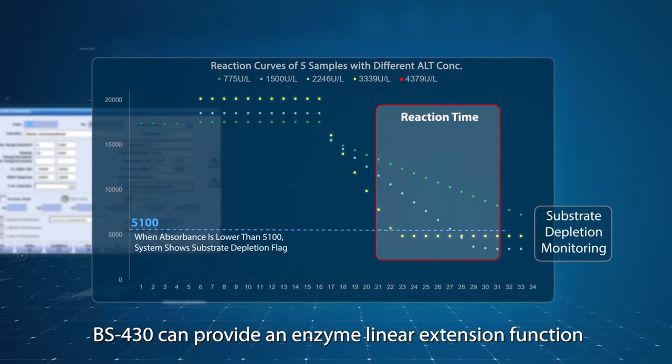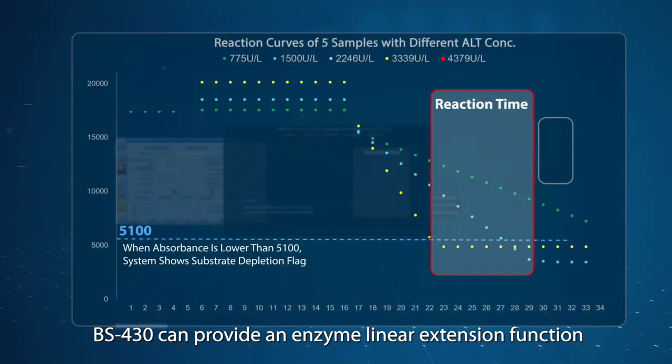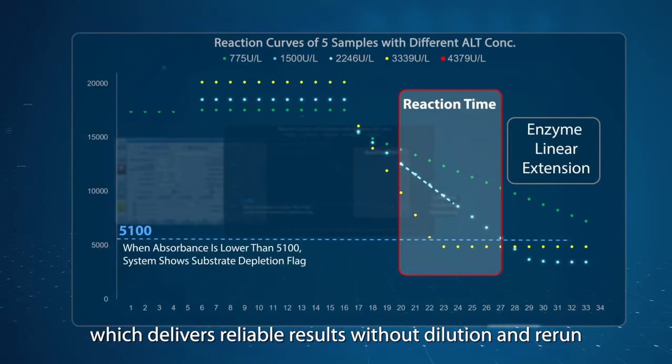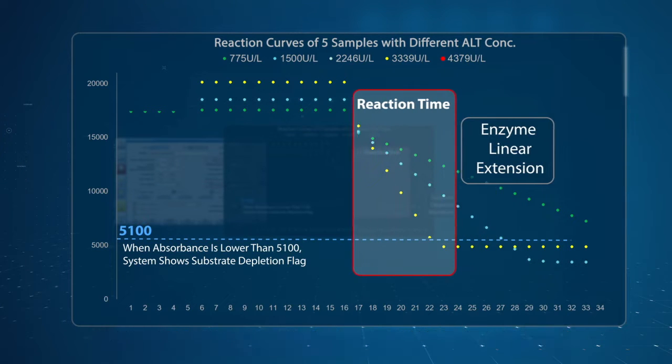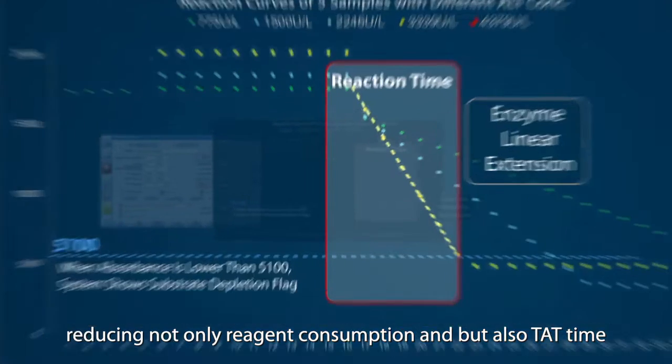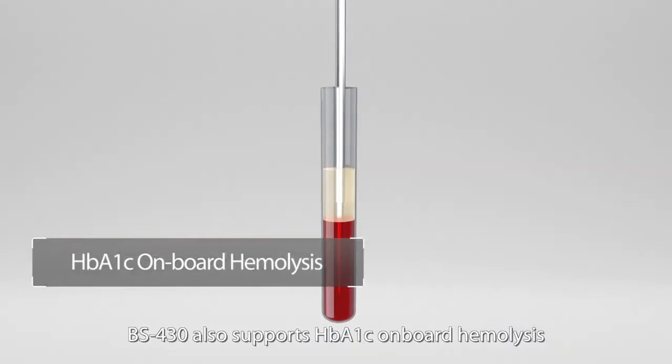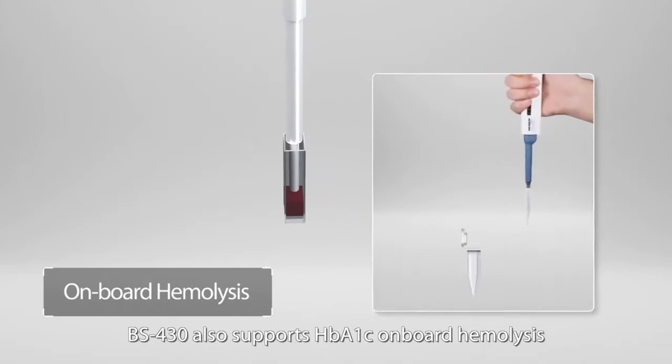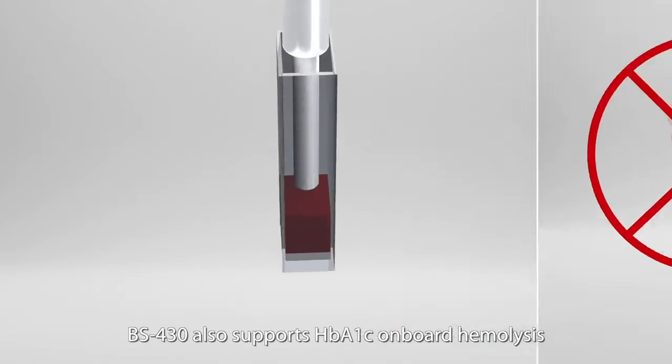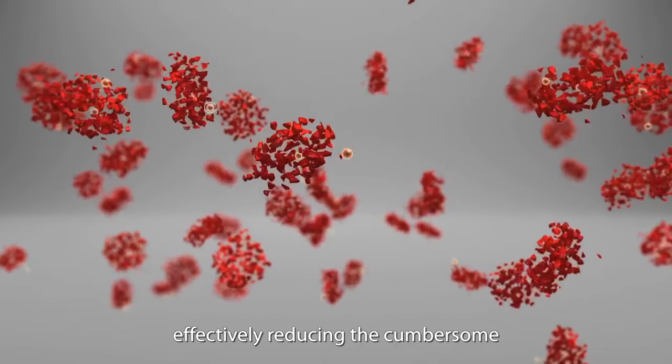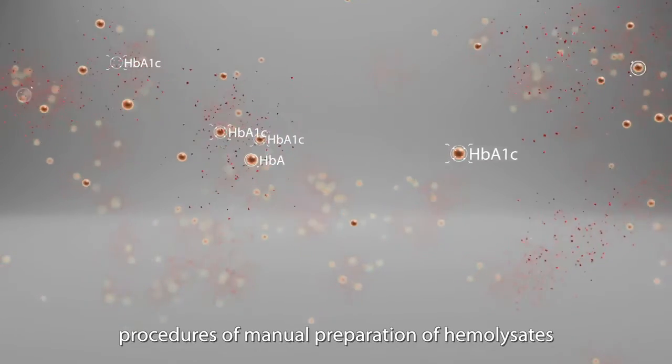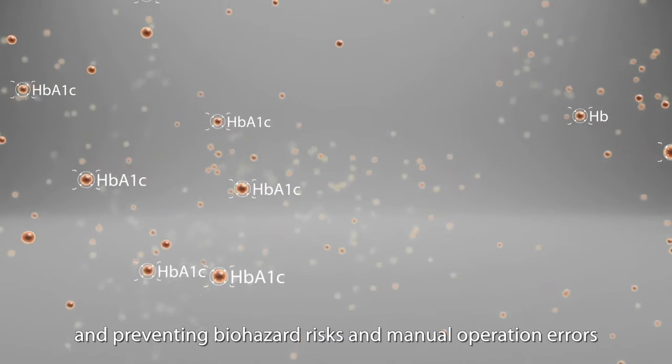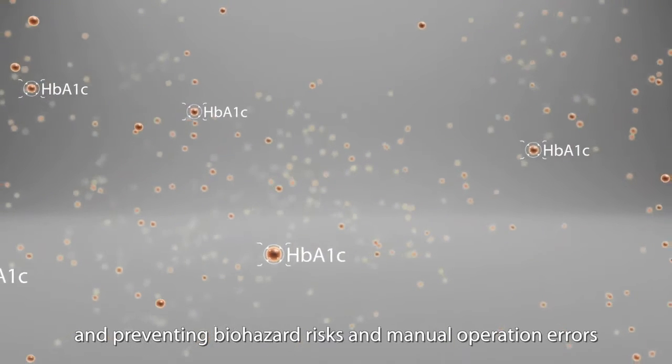Moreover, BS430 can provide an enzyme linear extension function which delivers reliable results without dilution and rerun, reducing not only reagent consumption but also TAT time. BS430 also supports HBA1C onboard hemolysis, effectively reducing the cumbersome procedures of manual preparation of hemolysates and preventing biohazard risks and manual operation errors.